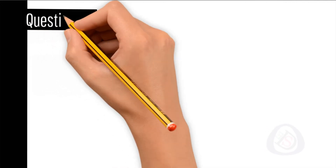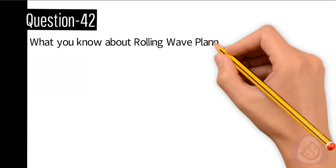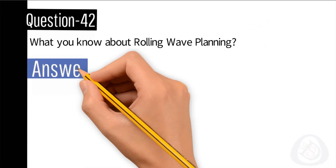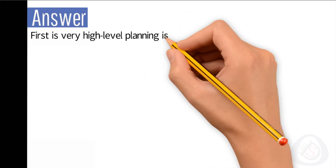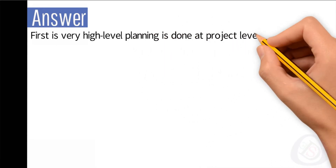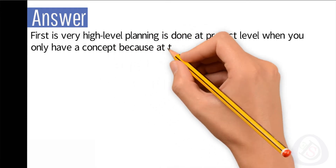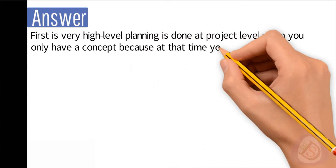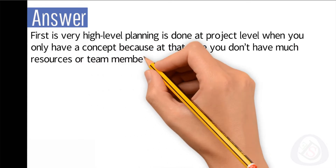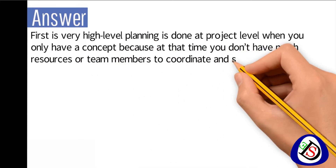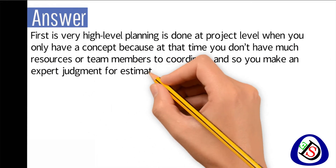Question number 42: What do you know about rolling wave planning? First, very high level planning is done at the project level. Initially you only have a concept because at that time you don't have many resources or team members to coordinate, so you make an expert judgment for estimations.